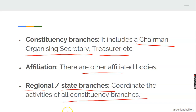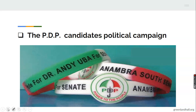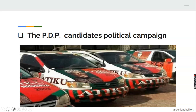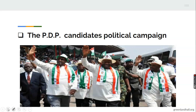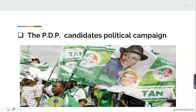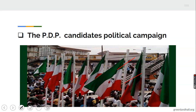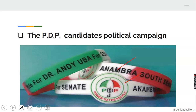Let's look at the PDP. Here is a picture of the PDP candidates' political campaign. You can see the branded vehicles of Atiku for the campaign. This is Jonathan, Namadi Sambo — these are the branded vehicles, the flags of the party, and you will also see the wristbands.